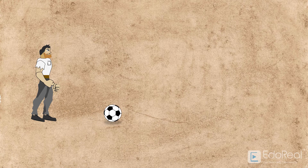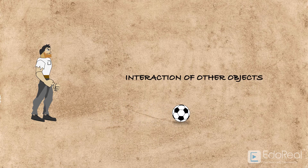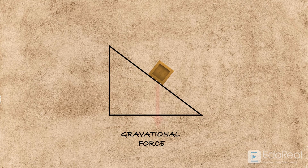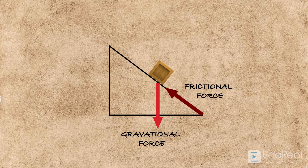So, force can be explained as a push or pull upon an object resulting from its interaction with another object. If we place a box on a slant surface, two forces act on the box: one is gravitational force that pulls the box down, and the other is frictional force that acts against the pull. Here, frictional force is a contact force.